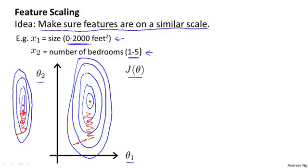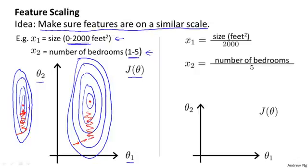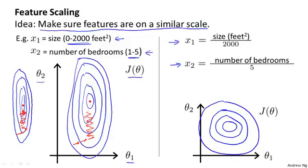In these settings, a useful thing to do is to scale the features. Concretely, if you instead define the feature x1 to be the size of the house divided by 2,000, and define x2 to be the number of bedrooms divided by 5, then the contours of the cost function j can become much less skewed, so the contours may look more like circles.